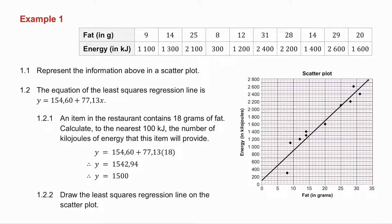1.2.2 says draw the least squares regression line on the scatterplot. Now, the least squares regression line is a straight line. There's your Y intercept, so I can plot my Y intercept. I know when X is 18, I get a Y value of 1542.94. So when X is 18, I plot that point. So I've got the Y intercept, I've got the point I've just worked out, so I can draw the equation of the line.